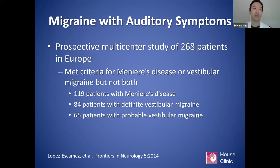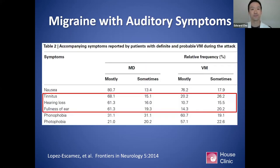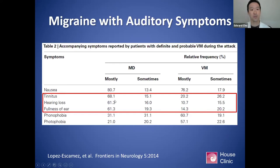Now, how often do you see the flip side — migraine with auditory symptoms you might see in Meniere's? A prospective study in Europe of patients who met criteria for Meniere's or vestibular migraine but not both, divided into definite and probable vestibular migraine. Their summary table outlined hearing symptoms — tinnitus, hearing loss, fullness of the ear. In patients with Meniere's disease, as expected, a large portion — probably more than 80% — complained of these issues. But in vestibular migraine, there were still 30 to 40% of individuals who complained of these symptoms.